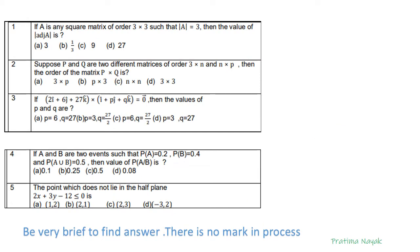First question: if A is any square matrix of order 3×3 and determinant of A is 3, then the value of determinant of adjoint A is how much? We apply the formula: determinant of adjoint A equals determinant A to the power n minus 1, where n is the order. Here order is 3, so 3 to the power 3 minus 1, that is 3 squared equals 9. So C is the answer.